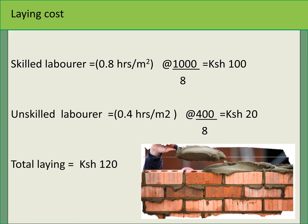For laying cost, we use one skilled laborer and one unskilled laborer. The skilled laborer is paid 1,000 shillings for eight hours. It takes him 0.8 hours to construct one meter squared, so we pay him 1,000 ÷ 8 × 0.8 = 100 shillings per meter squared. The unskilled laborer uses 0.4 hours to lay one meter squared and is paid 50 shillings per hour, so 0.4 × 50 = 20 shillings. Total laying cost is 120 shillings per meter squared.